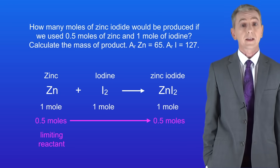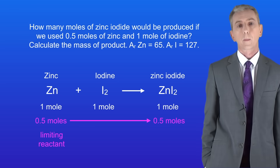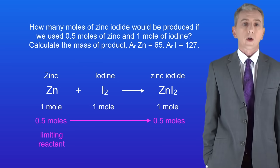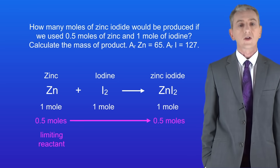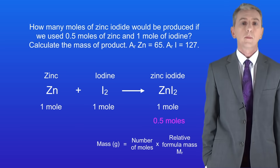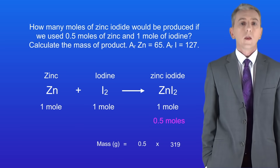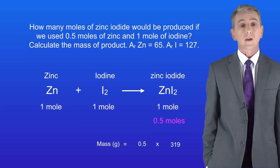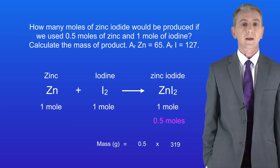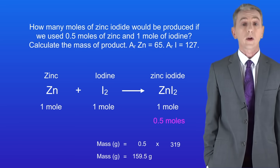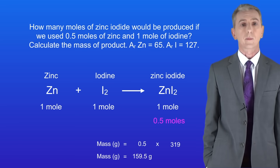There'll be some iodine left over at the end of the reaction. The question also asks us to calculate the mass of product. To do this we use the equation: mass equals number of moles multiplied by relative formula mass. The relative formula mass of zinc iodide is 319. Multiplying 0.5 by 319 gives us a final mass of 159.5 grams.